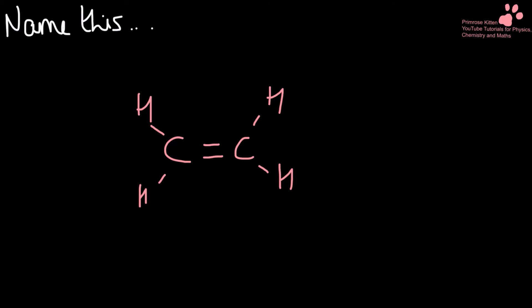Name this. Here we have two carbons and a double bond, so this is ethene. Remember, when we're looking for double bonds, it is 'ene' because 'ene' has two E's — double bond. And 'ane' is going to end in a single bond.